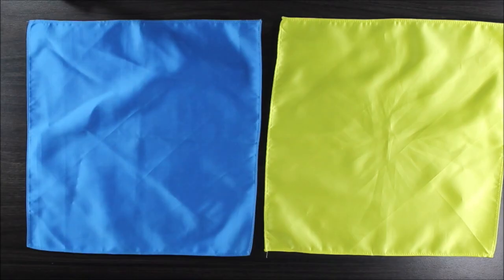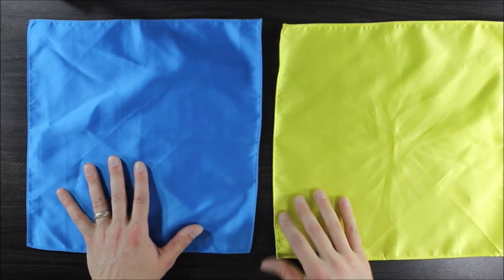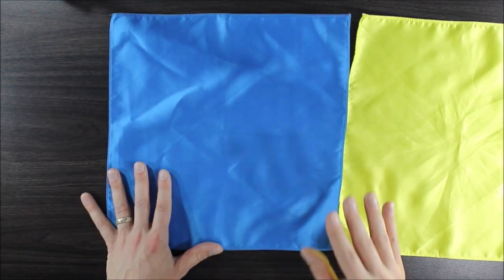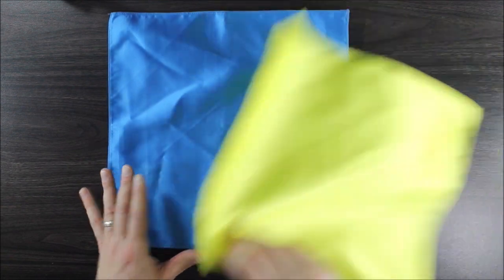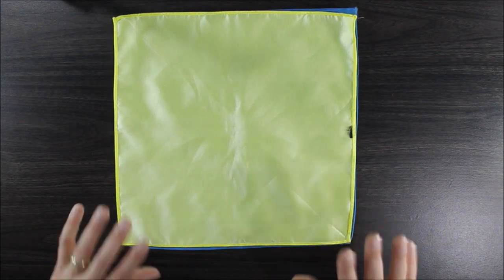In this video I'm going to be showing you how to do the super rose fold. So the super rose fold, you lay out your two pocket squares. I have satin, it's unfinished on one side, so when I want it to be finished the way I want it to be, I have to have the satin flipped over so I have the unfinished side on top.